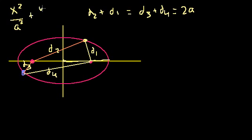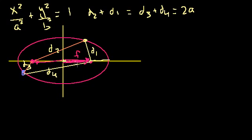x squared over a squared plus y squared over b squared is equal to 1. And we learned that the focal distance — the distance from the center of the ellipse to a focus — is just the square root of the difference of these two numbers. So the focal distance is equal to the square root of a squared minus b squared, when a is larger, which is the case in this ellipse.